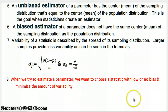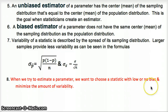We want to choose a statistic with low or no bias — minimize bias and minimize variability. To do that, we want a large sample size and conditions met. We want to carry out all our work with an SRS, or if it's an experiment, with random assignment to establish cause and effect. The SRS lets us apply results to the population from which the sample came.